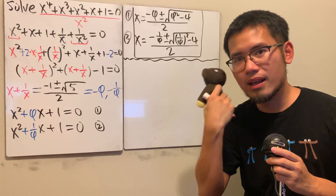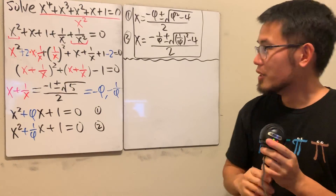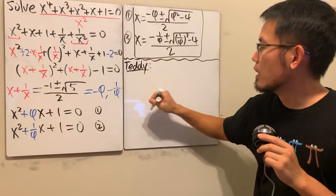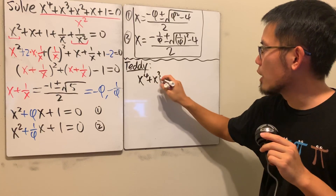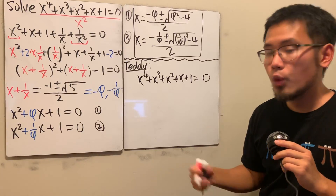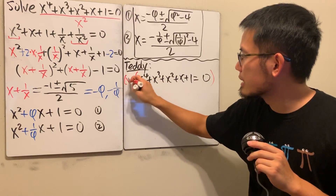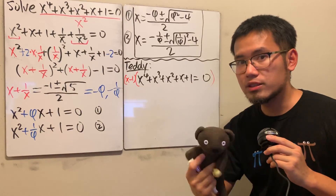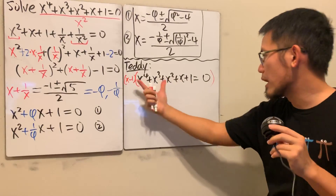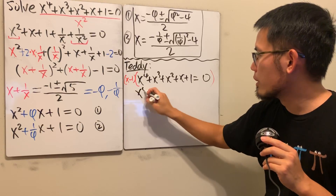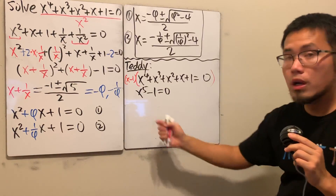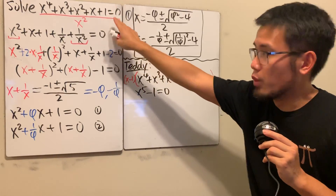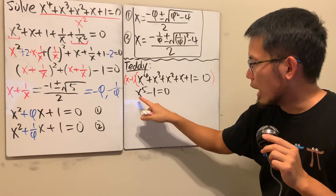Now Teddy has another method. With the original equation x⁴ + x³ + x² + x + 1 = 0, what we do is multiply everybody by (x − 1). The left-hand side becomes x⁵ − 1. You can multiply it out or just recognize the pattern: x⁵ − 1 = 0. But don't forget: x = 1 is not a solution to the original equation.